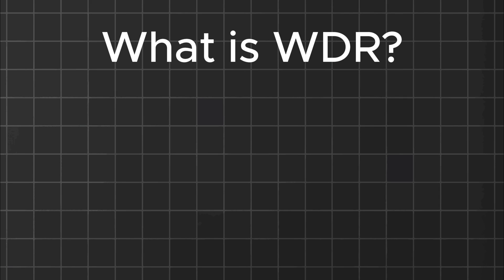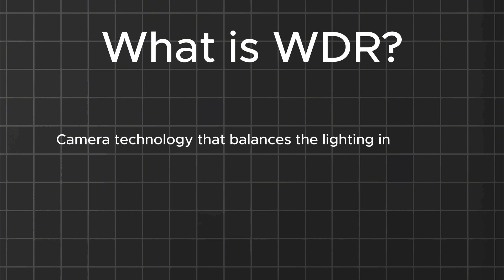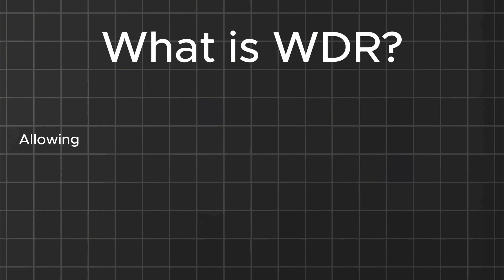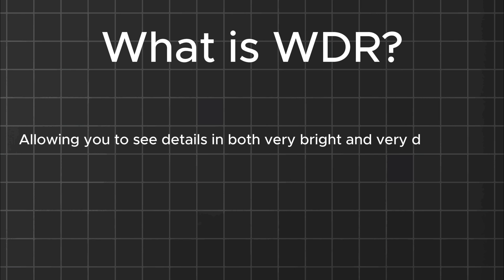So what exactly is wide dynamic range? Basically it's a camera technology that balances the lighting in a scene, allowing you to see details in both very bright and very dark areas at the same time.